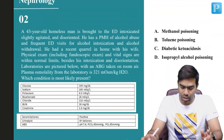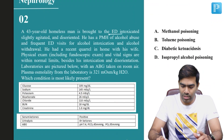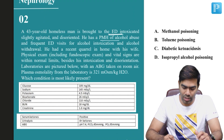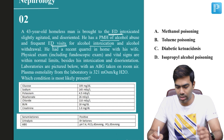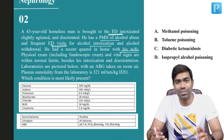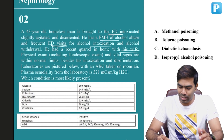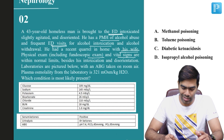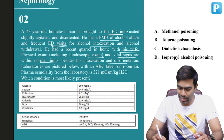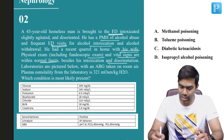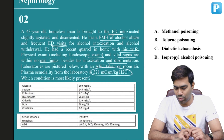Coming to the second question: a 43-year-old homeless man is brought to the emergency department, intoxicated and slightly agitated and disoriented. He has a past medical history of alcohol abuse and frequent emergency department visits for alcohol intoxication and alcohol withdrawal. He had a recent quarrel at home with his wife. Physical examination including fundoscopic exam and vital signs are within normal limits besides his intoxication and disorientation. The laboratory picture is shown below with an ABG taken on room air. Plasma osmolality from the lab is 321 milliosmol per kilogram.